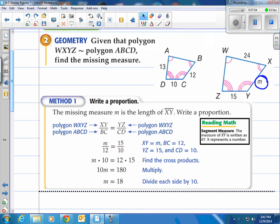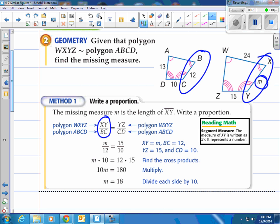The first method. The missing measure M is the length XY. So we'll write a proportion using that. So we have XY corresponds with BC. And then they go and find YZ and CD. These both have numbers in them. So we have YZ and CD. Both those have numbers. And notice the tops of these are both from WXYZ and the bottoms are both from ABCD.